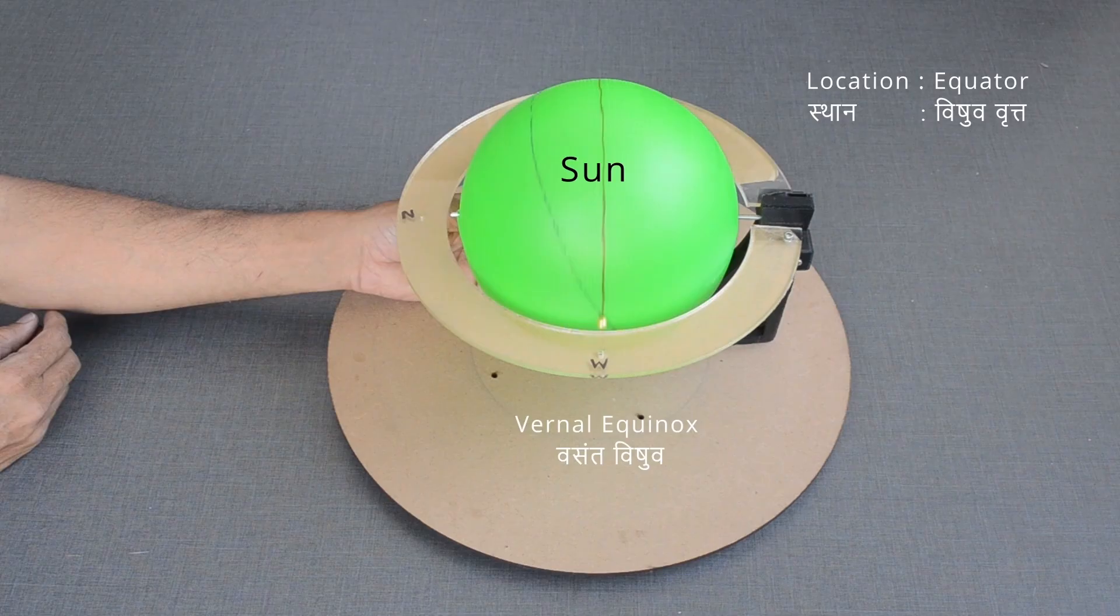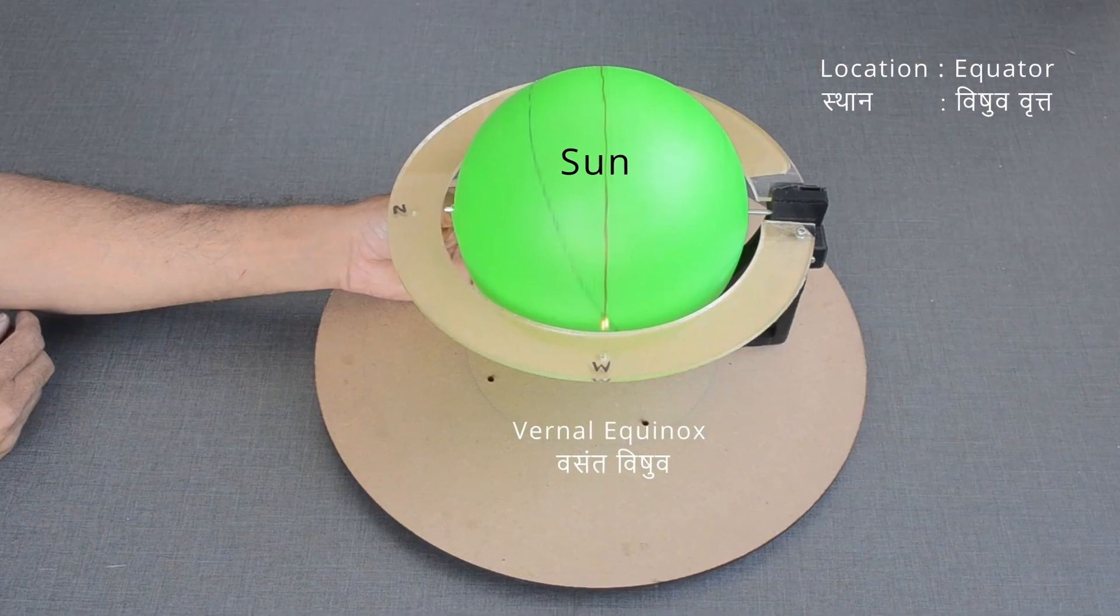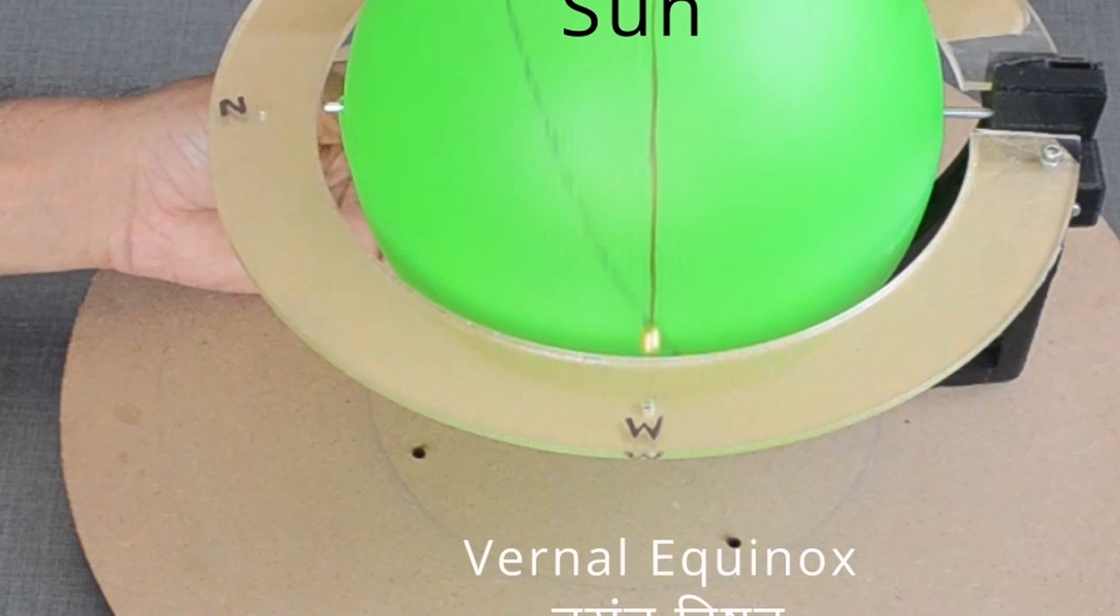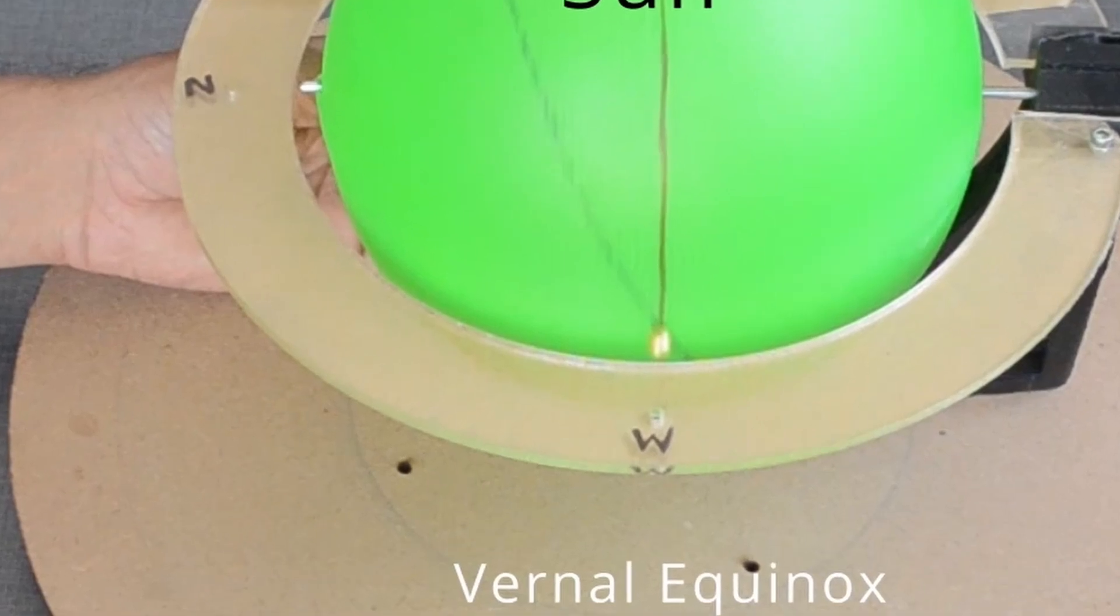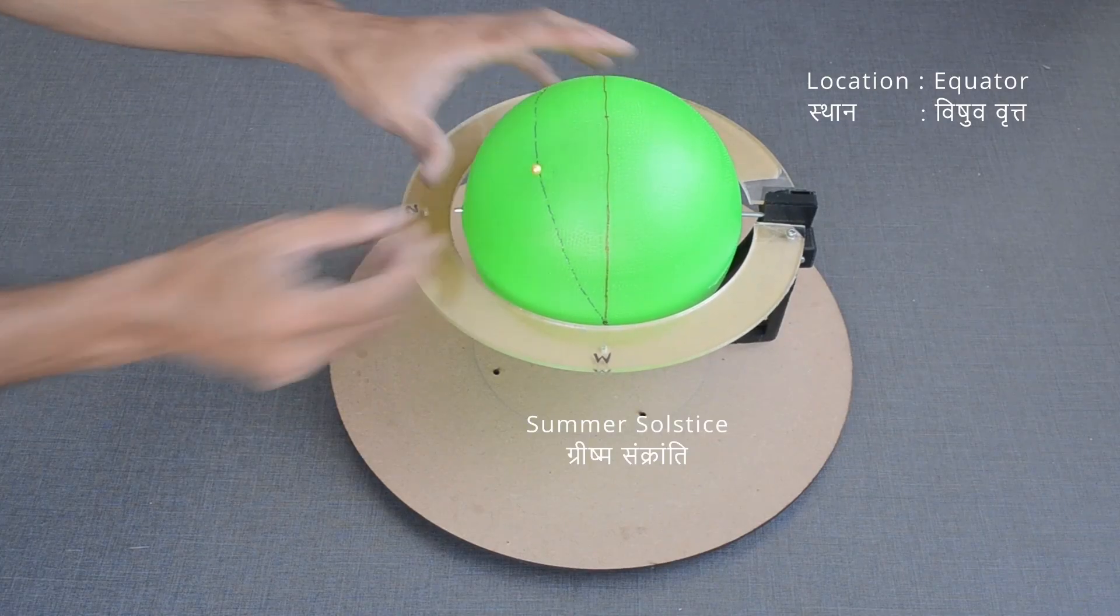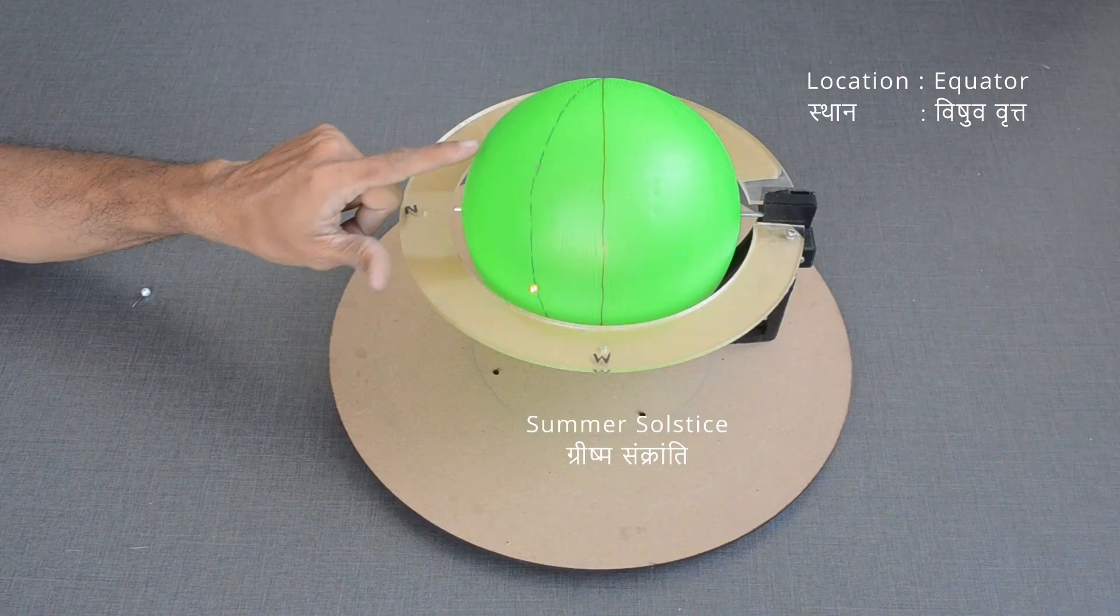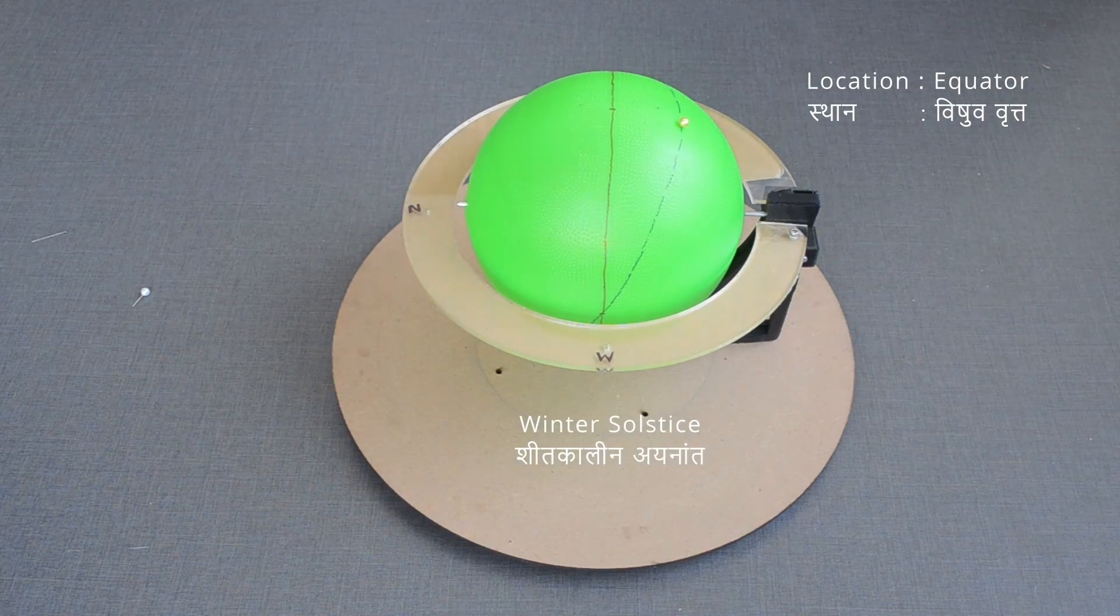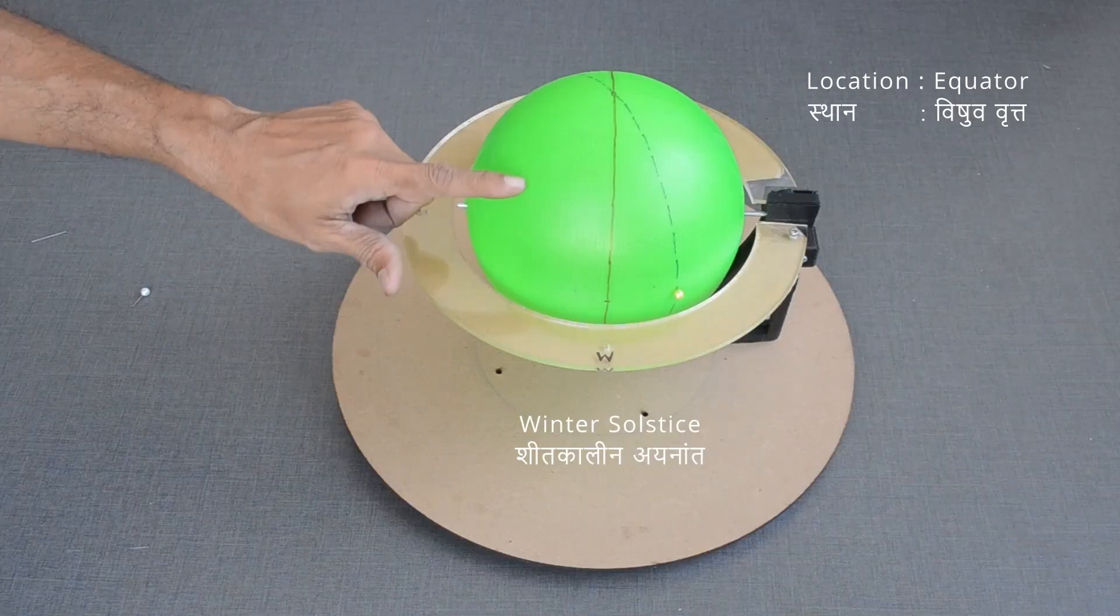the value for right ascension and declination changes continuously for the Sun throughout the year. For the person standing on the equator, Sun sets at this location on equinox days.